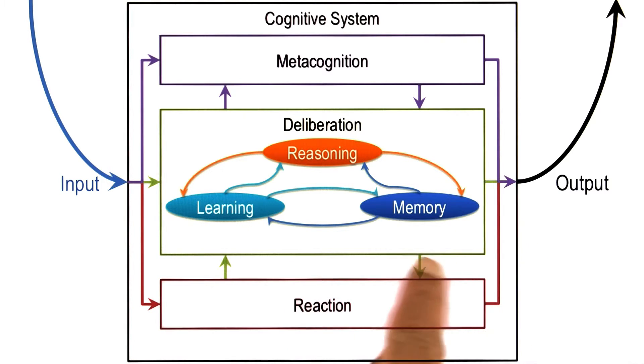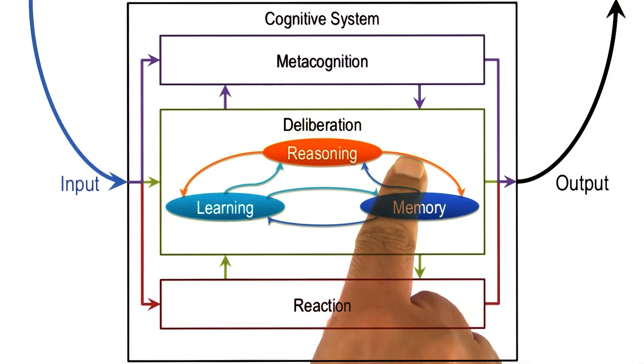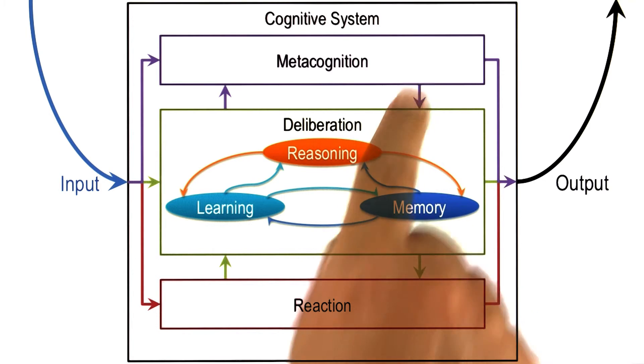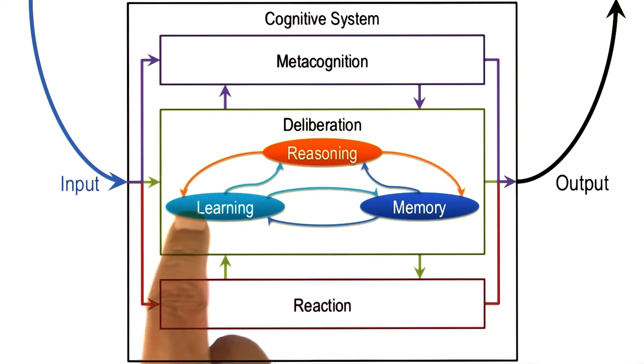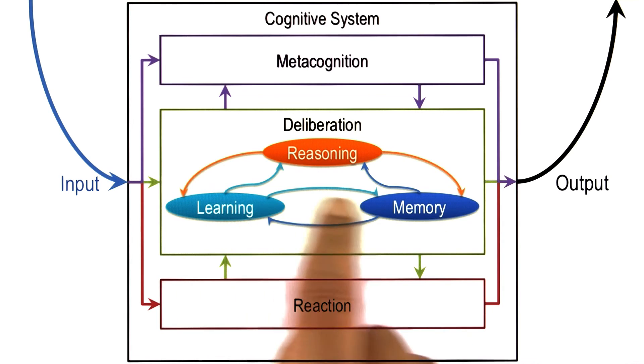We should not be overly concerned whether something should go into the deliberation space or into the metacognition space. The more important thing is, what is the content of knowledge that we need to carry out a process, and what is the process that we need to carry out.